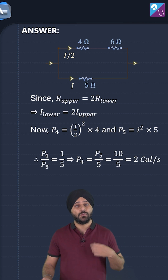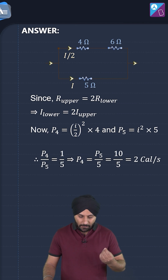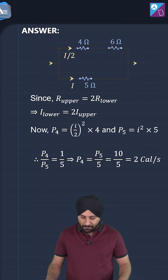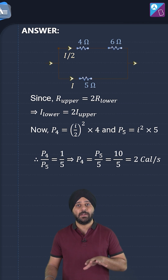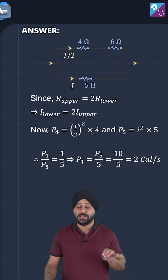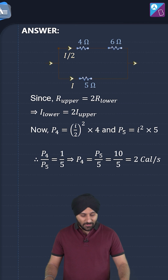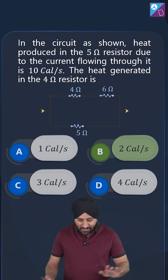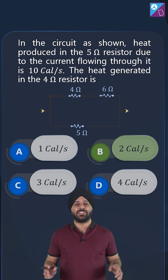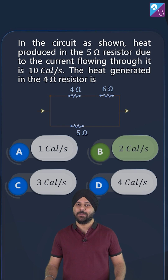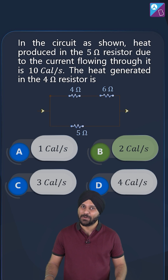Taking the ratio P4/P5, it works out to 1/5. Therefore P4 = P5/5 = 10/5 = 2 calories per second. So the final answer to the given question is option B: 2 calories per second.